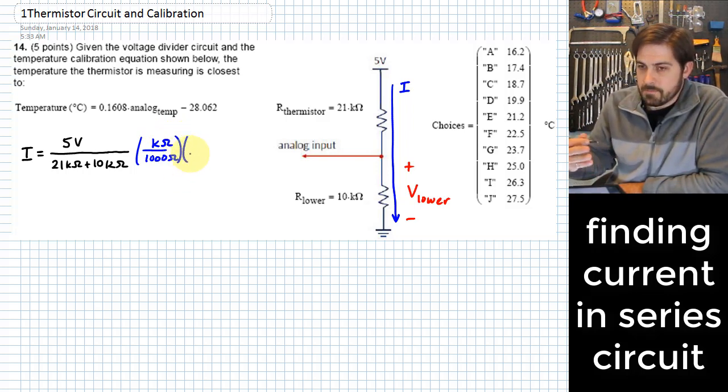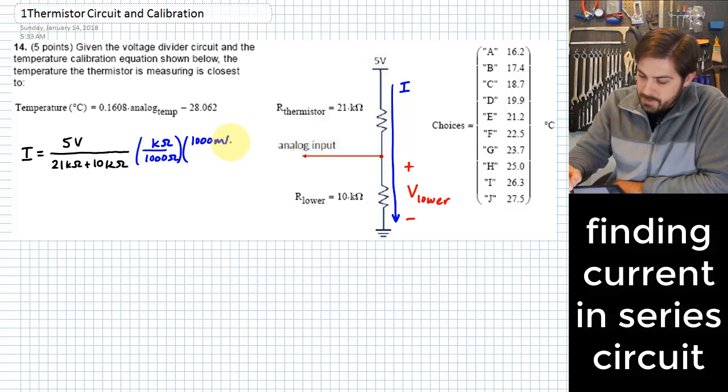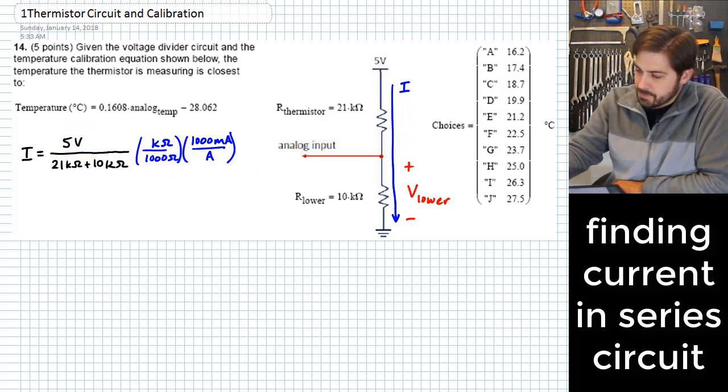And also, we know that a milli of something, like a milliamp, is a thousandth of something. A thousand milliamps is 1 amp. And I want to express this in milliamps, and so I'm going to put 1000 milliamps up here, and an amp down here.